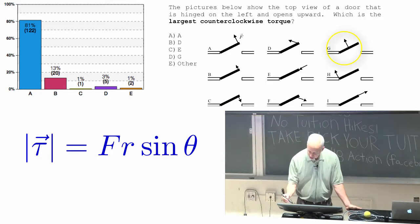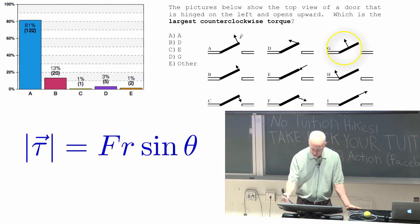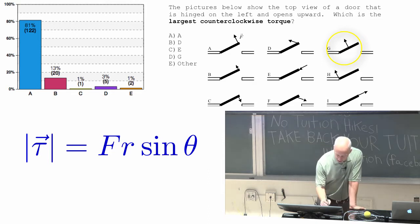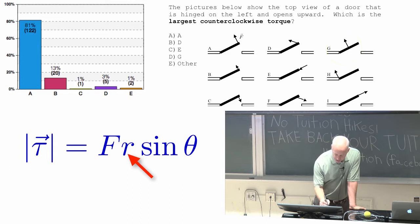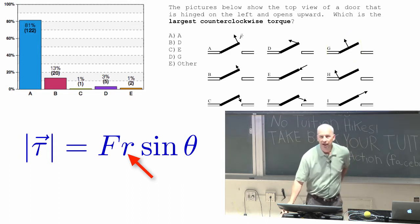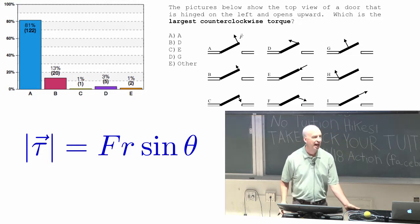So that's the problem with G. G has the force closer, the same force as A, but closer to the axis of rotation. In fact, about half the distance. So this R here, in the torque equation, is about half as much. You get half the torque if you apply it half as far.